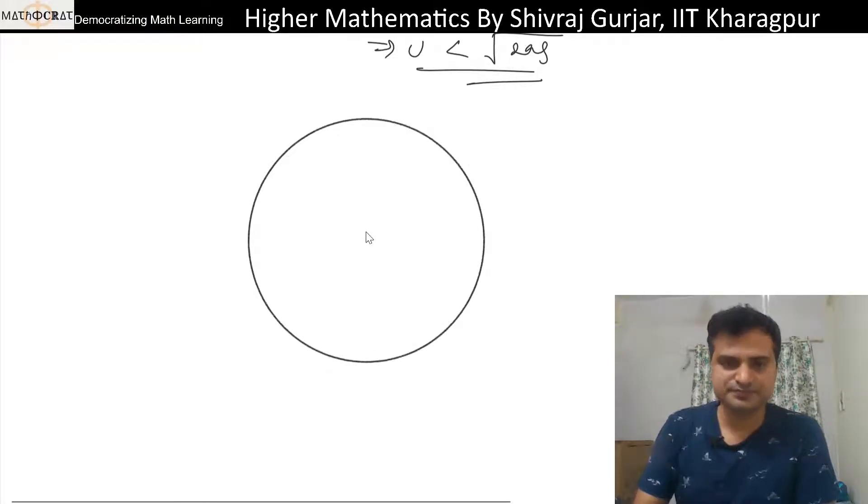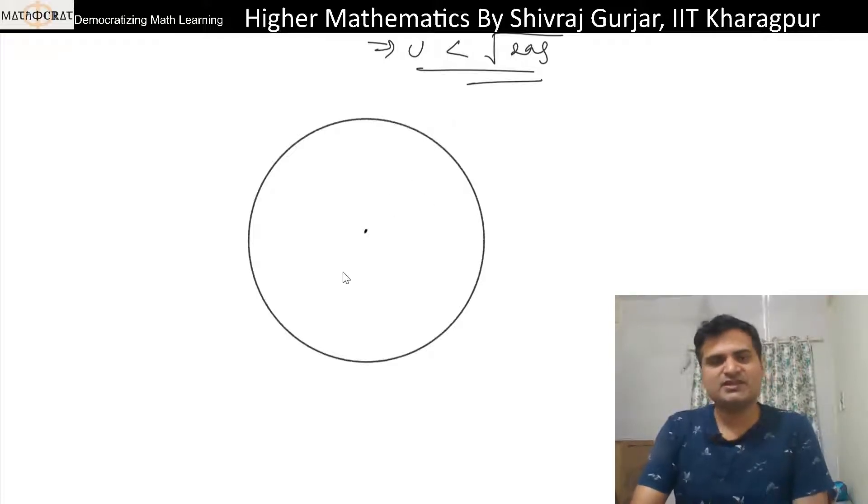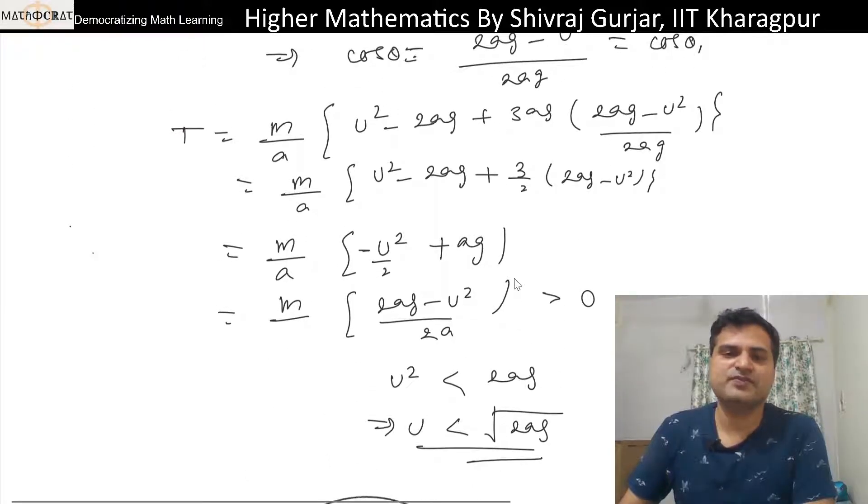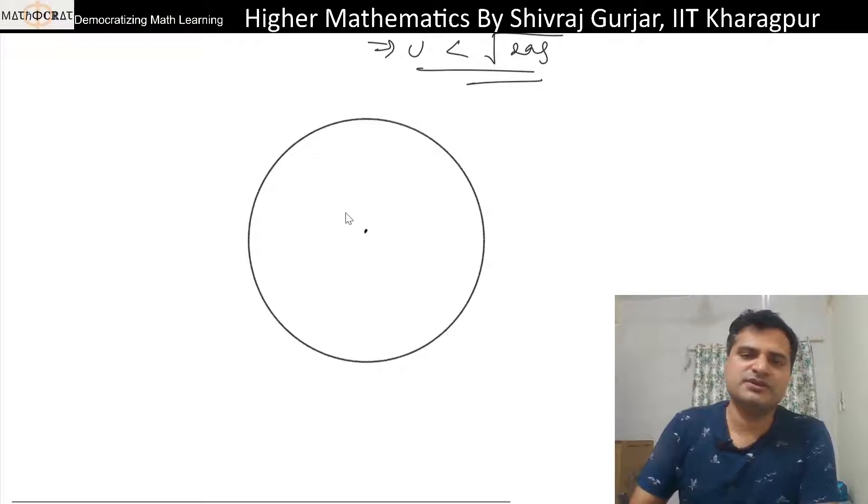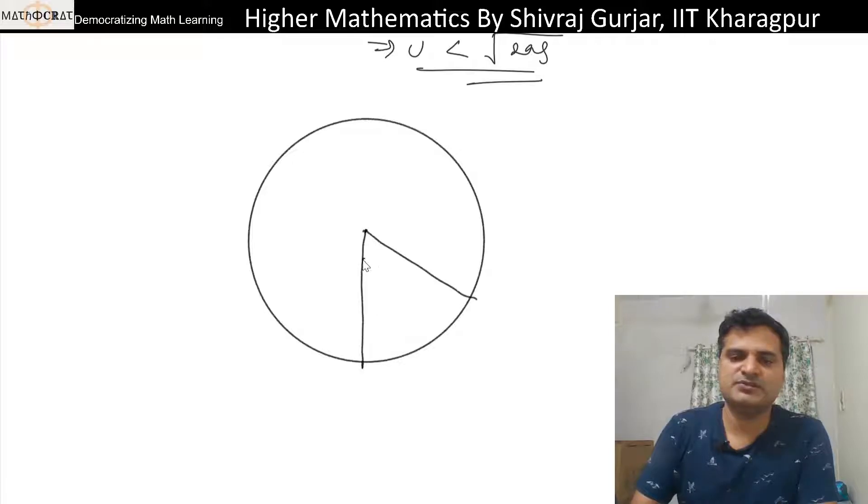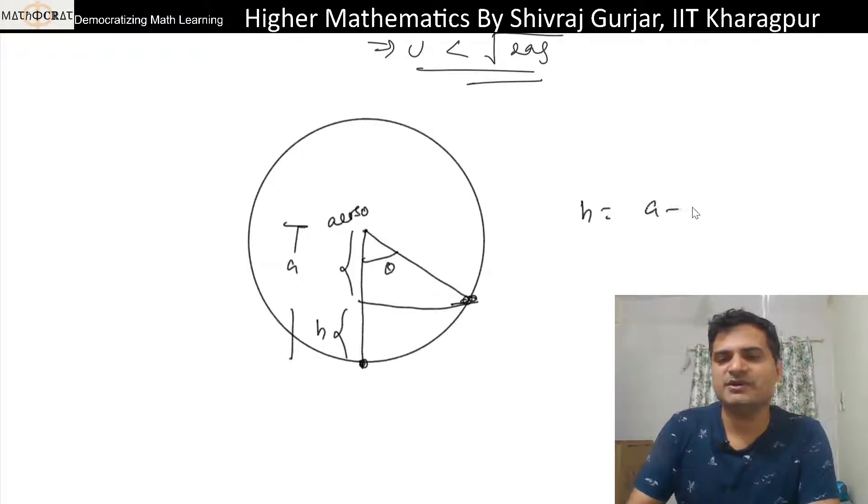And tension will be given by this. So in this case what will happen, this is the motion. If we project the particle with less than √(2ag) initial velocity then its tension won't be zero but velocity will become zero at what height? This is the height, it has total a